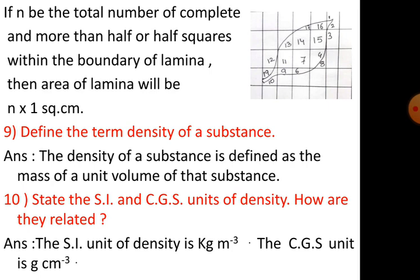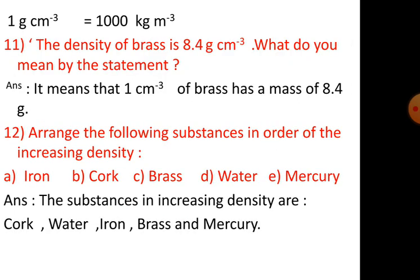Number 10. State the SI and CGS units of density. How are they related? The SI unit of density is kg per meter cube. The CGS unit is gram per centimeter cube.